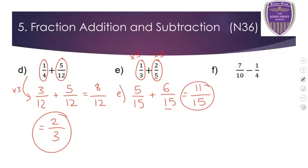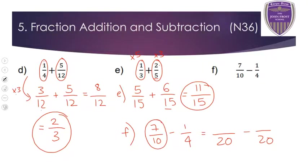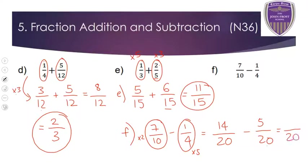For question F, 7 over 10 minus 1 over 4. The denominators are not the same, and 4 doesn't go into 10. Count up in 10s and 4s — the first number in both is 20. So make both denominators 20. For 7 over 10, times by 2 — 7 times 2 is 14, giving 14 over 20. For 1 over 4, the bottom was 4, changed to 20, so times by 5 — 1 times 5 is 5, giving 5 over 20. Then 14 take away 5 is 9. The 20 stays the same, and 9 over 20 can't be simplified. Answer is 9 over 20.